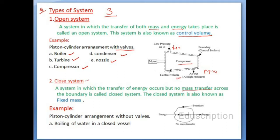The second type is the closed system. A system in which the transfer of energy occurs but no mass transfer across the boundary is called a closed system, also known as a fixed mass. The mass remains constant; energy may or may not transfer. Examples include a piston and cylinder without valves, and boiling of water in a closed vessel — in a closed vessel the mass will remain constant, so this is a closed system.